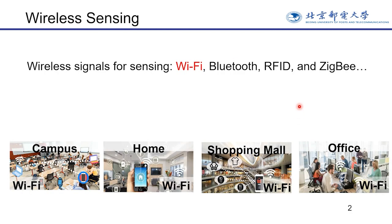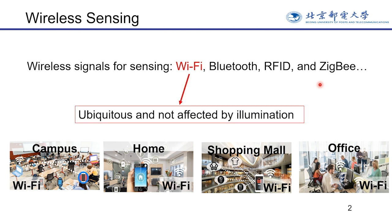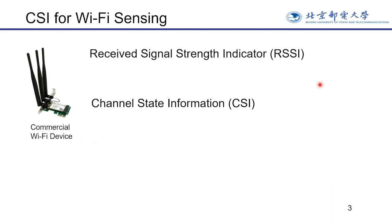In recent years, wireless sensing has attracted more and more attention. Researchers use wireless signals such as Wi-Fi, Bluetooth, RFID, and Zigbee to sense the behaviors of a person or the states of other objects. Since Wi-Fi is ubiquitous and not affected by illumination, Wi-Fi-based wireless sensing has been widely studied.